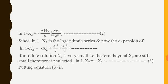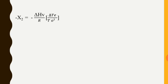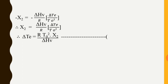Putting this into Equation 3, we get: −X2 = −(ΔHv/R) × (ΔTe/T0²). Cancelling the negative signs and rearranging, we get: ΔTe = (R·T0²·X2)/ΔHv. Here, R·T0²/ΔHv is a constant. Therefore, ΔTe is directly proportional to X2.